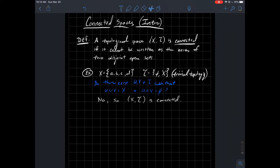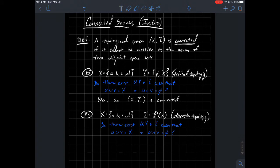Let's do another example. Same set X, but now pick the other extreme topology, the discrete topology. And so remember, that means that every possible subset of X is open. In other words, the whole topology is the power set. So you ask yourself the same question. Is this connected or not?